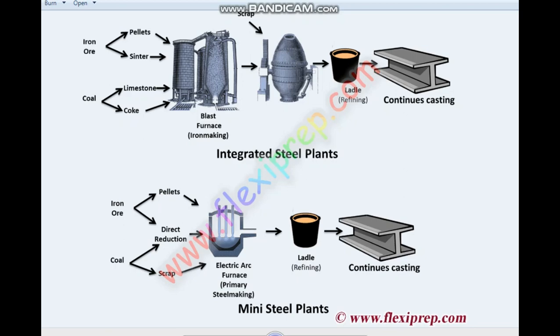Looking at the comparison diagram: integrated steel plants use large blast furnaces with iron ore, coking coal, and limestone. Mini steel plants use electric furnaces with only iron ore and coal at a minimum level. In the integrated plant, the material is processed with big equipment, moved through the stages, and pig iron is produced before final steel shaping.